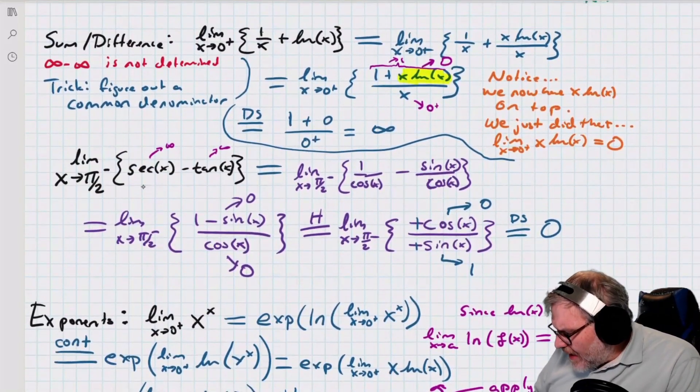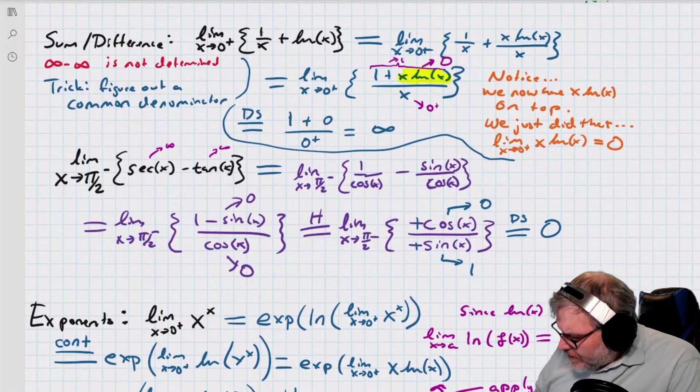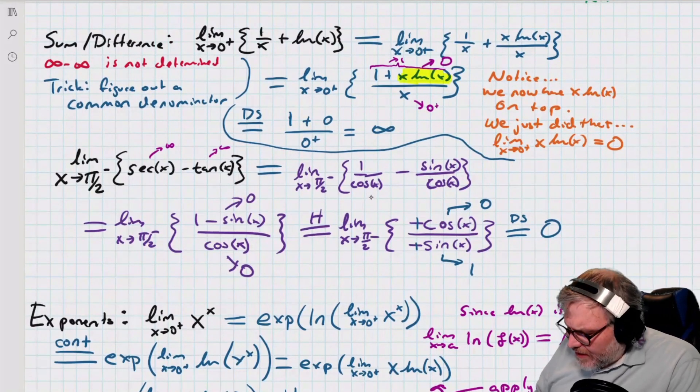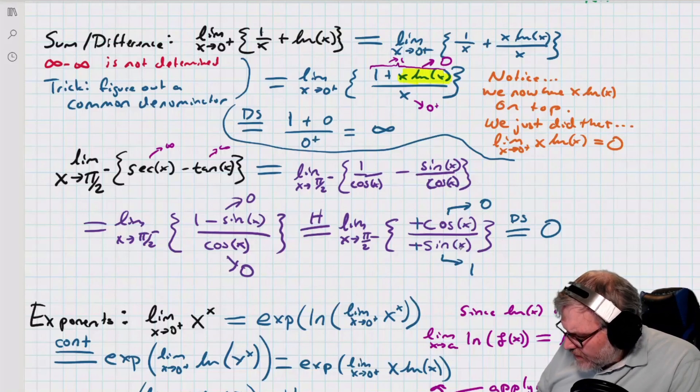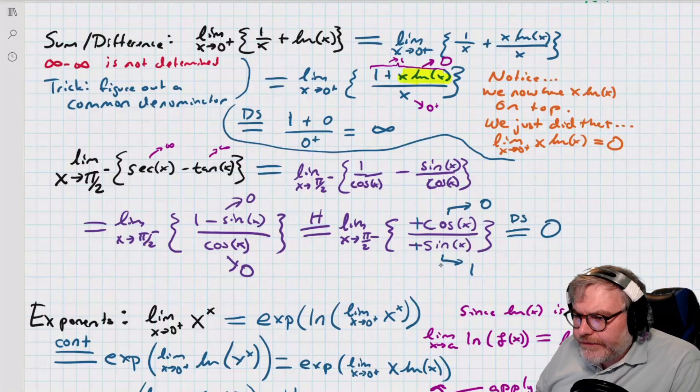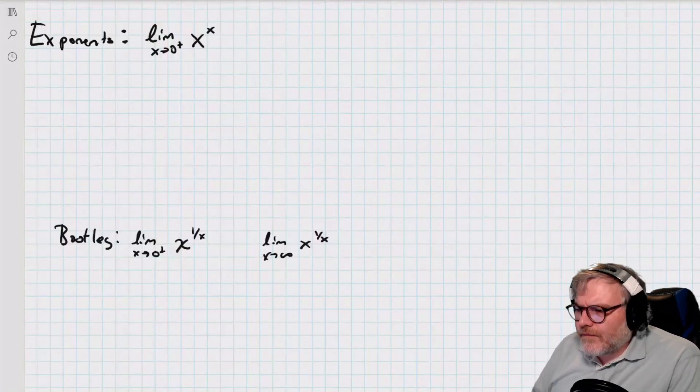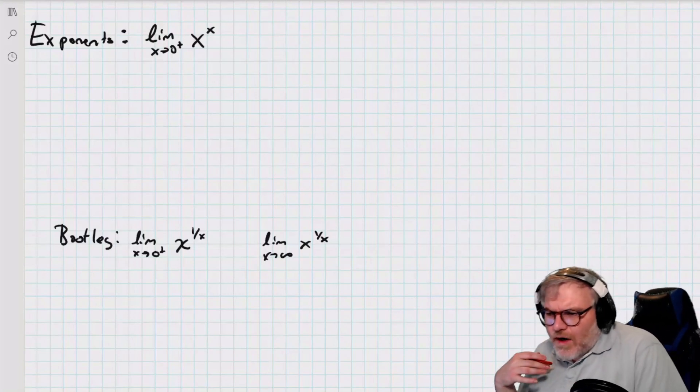Here's another one. Secant minus tangent. Well, what I'm going to do is I'm going to take a common denominator. The common denominator is cosine. So, now I'm going to have 1 minus sine over cosine. The top is going to 0. The bottom is going to 0. Do a little L'Hopital's rule action. I get cosine over negative sine. You get cotangent. I get 0 over 1. That's 0.